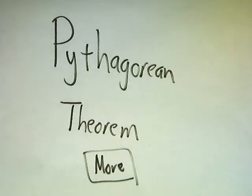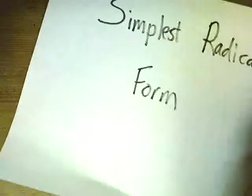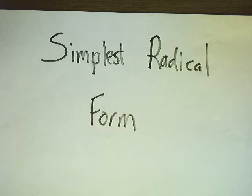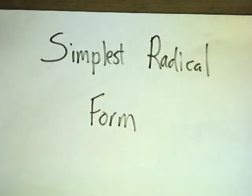We're going to talk first, before we get into anything else, about reducing things down to simplest radical form. One of the things that I really hate is getting long decimal answers. When you do the Pythagorean Theorem, you can end up with long decimal answers. In order to avoid that, we're going to put things in what's called simplest radical form.